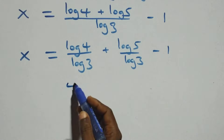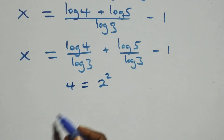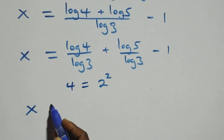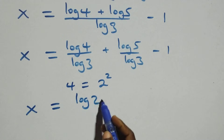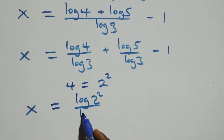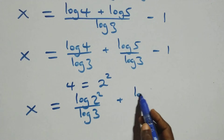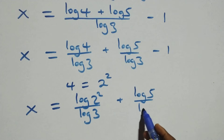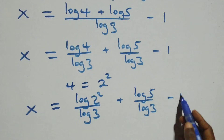We can also write 4 as 2 times 2, which is 2 squared. So this becomes x equals to log(2 squared) over log 3, plus log 5 over log 3, minus 1.